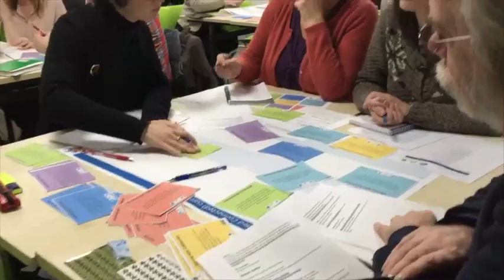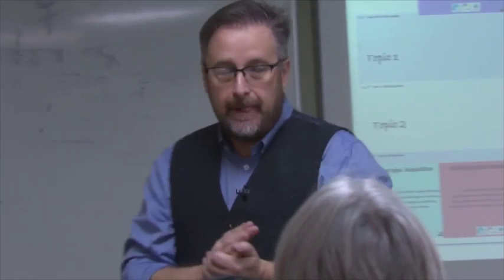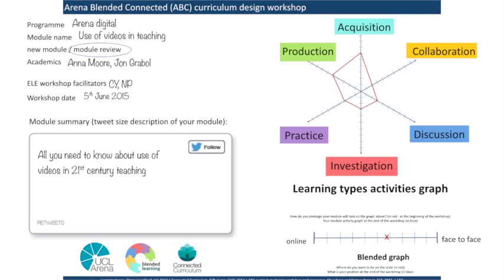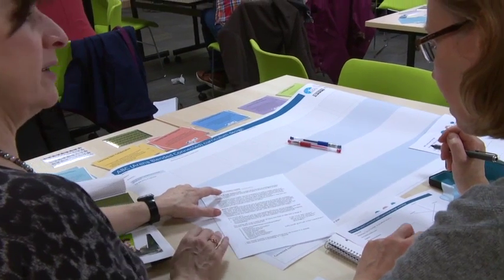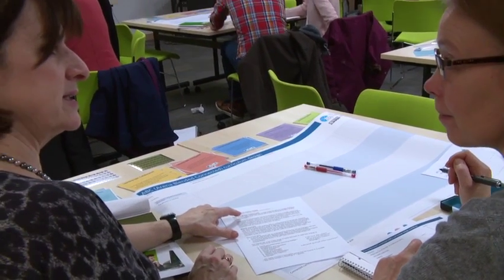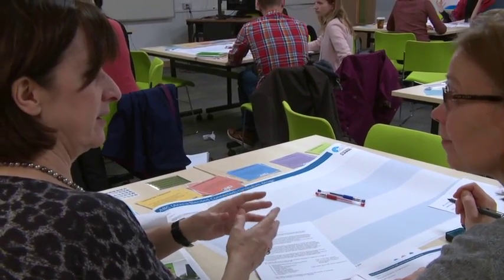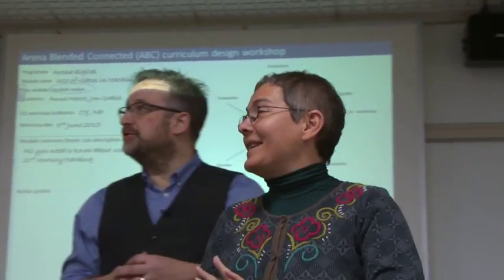To help that creativity, the tasks are timed. The first task is to create a tweet-sized summary — in 140 characters. For example: 'Social change in modern societies using the UK in comparative context.' You've got a tweet. Our module was Introduction to Social Research, and our tweet is: 'Understanding and exploring the world through social research.'